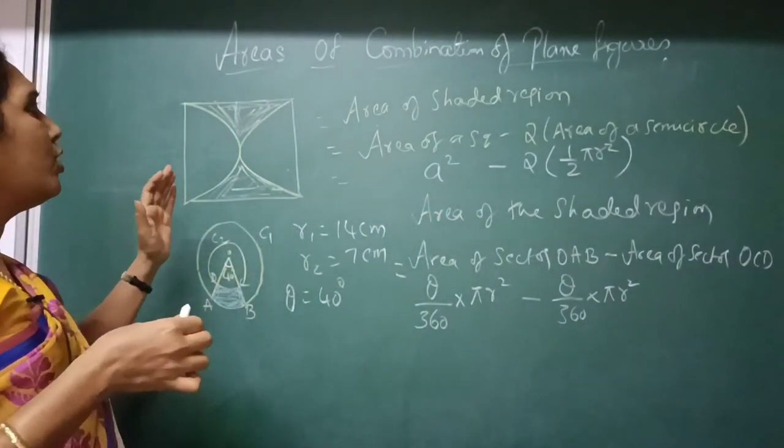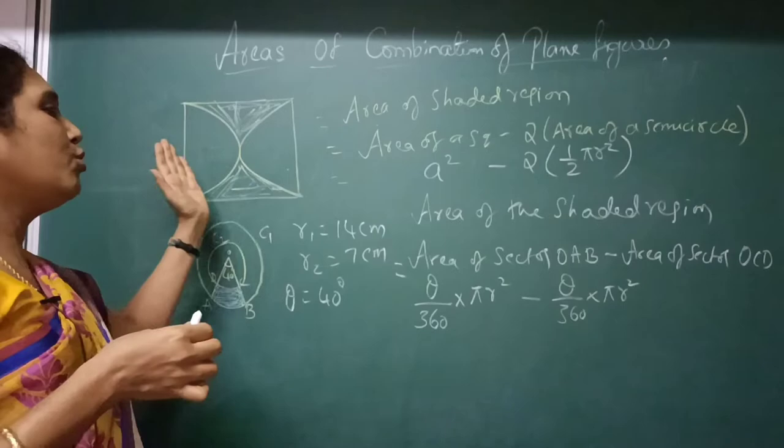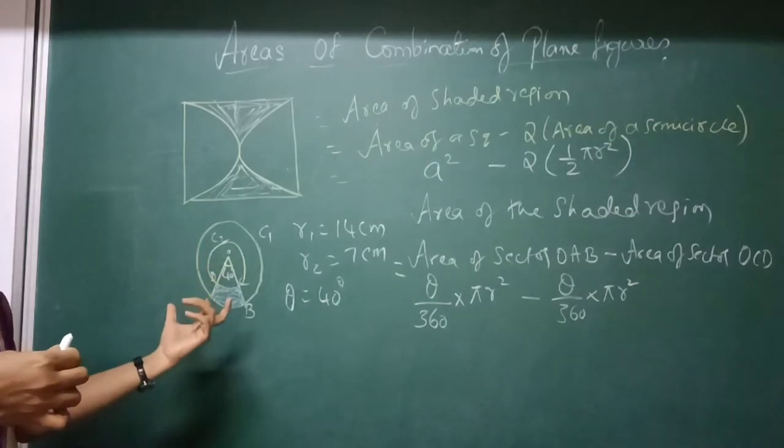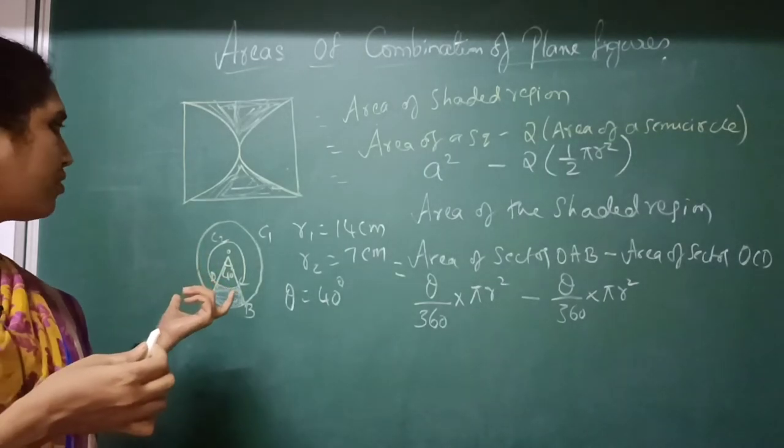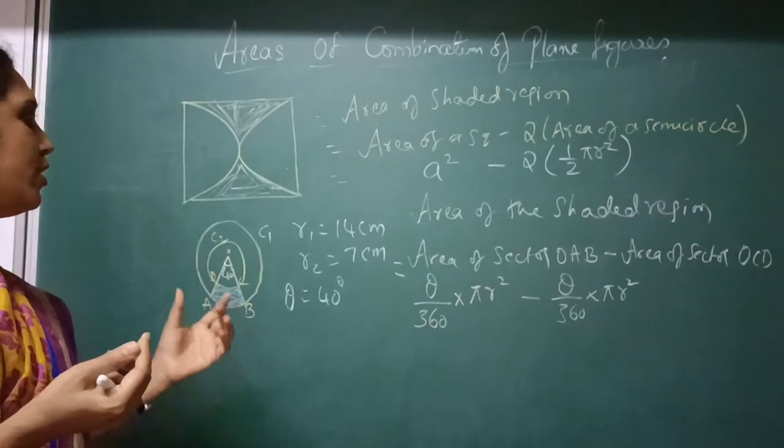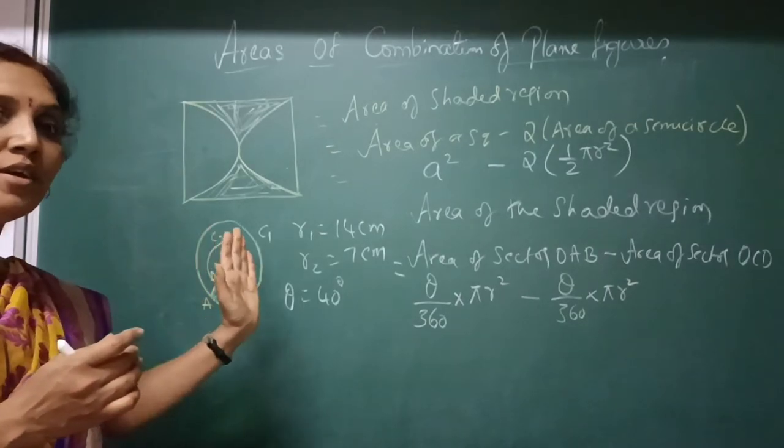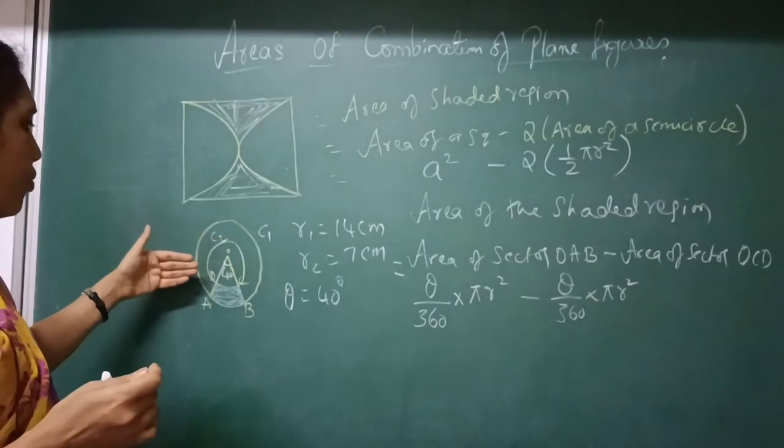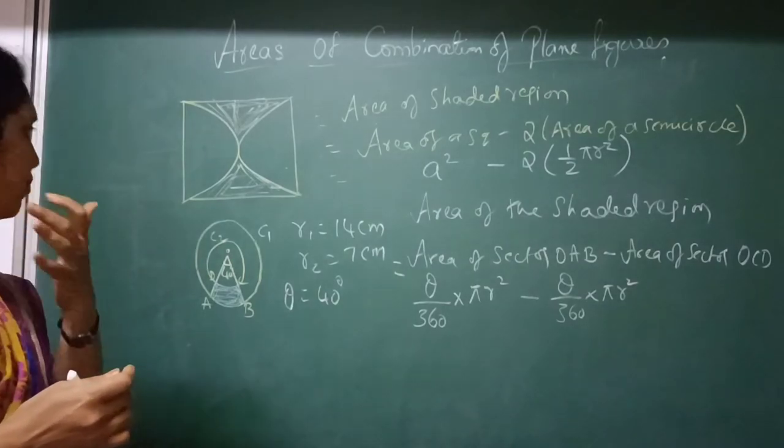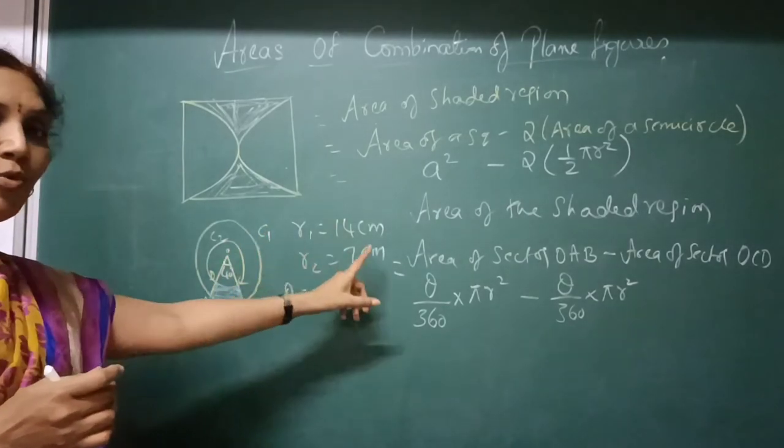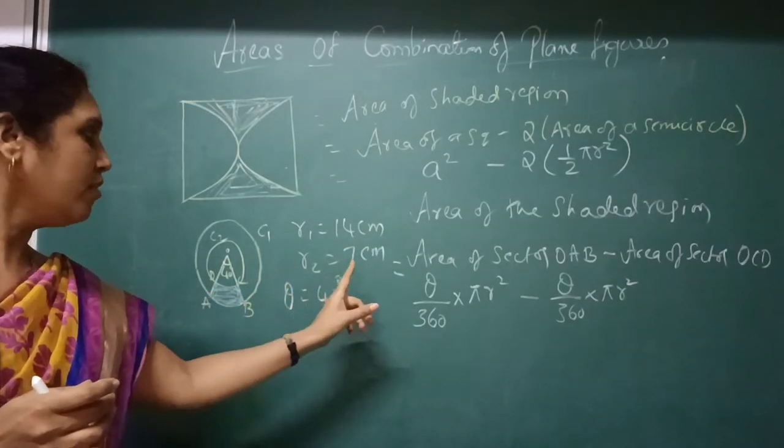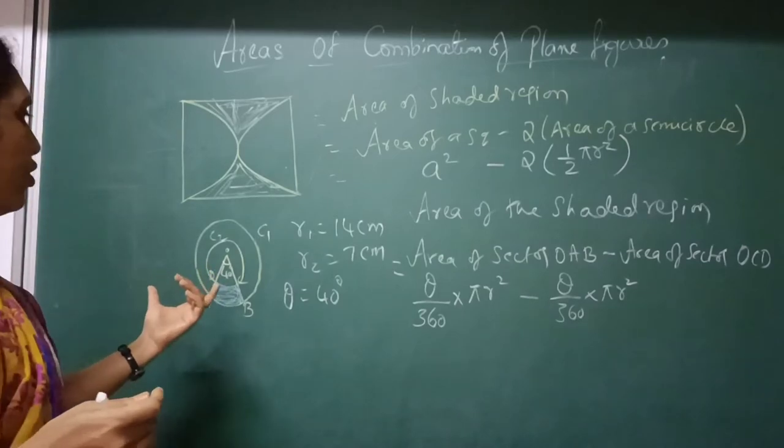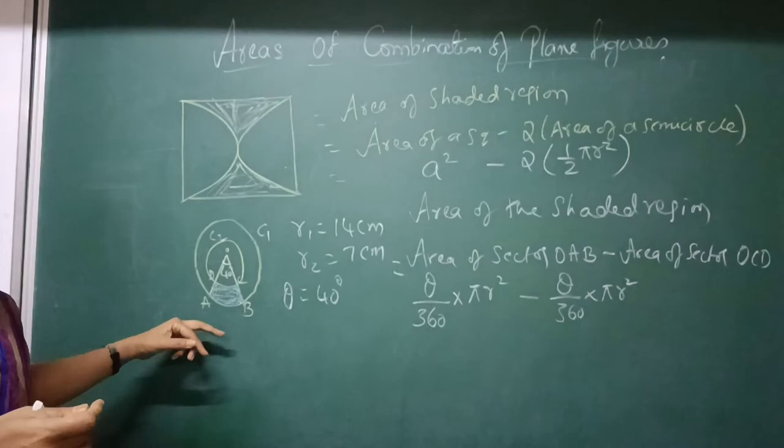And so in the previous one, angle was not given. So we were just using the formula and writing it. And in this case, see I have drawn two concentric circles. I think you know what is concentric circles. Concentric circles are the circles with the same center but different radii. So there are two concentric circles. I have given it as O, A, P, C, D is a sector. They have given the radius of one circle is 14 cm and the radius of another circle is 7 cm and the angle is 40 degree. So how are you going to find the shaded region? See, this is your shaded region.